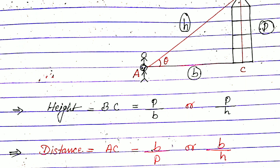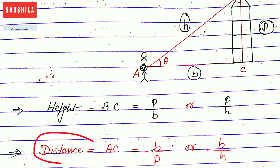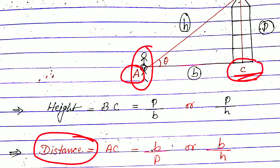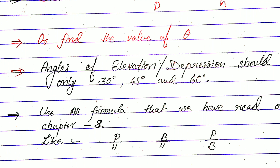Another thing we have to find in this chapter is distance — the distance between the person and the pillar. If the question asks for the distance between the person and the pillar, we have to find the value of AC, that is the base. It can be found using B/P or B/H.